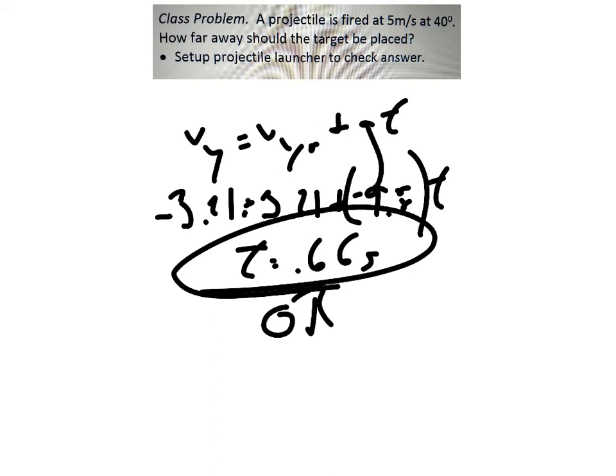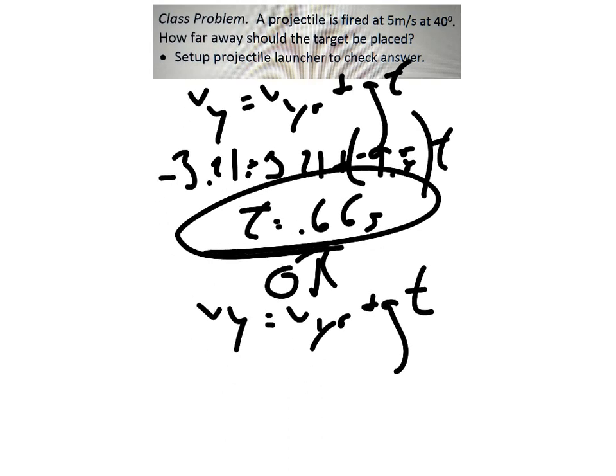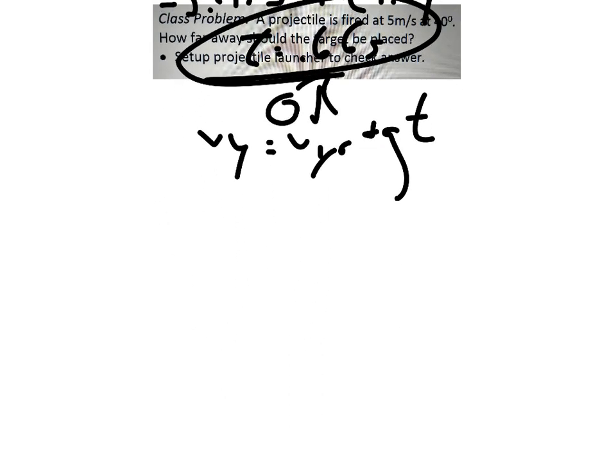You could also do the same equation. So that was the first option. So same equation, except this time we can do, instead of looking at the whole trip, we can just go to the peak. The final velocity, the Vy at the peak, is 0. Vertically, you're not moving up and down at the peak. So Vy is 0. Vy0 was still the 3.21 plus negative 9.8 T.